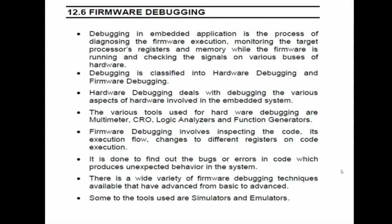How is it possible to verify that the developed product performs up to the mark? By running a program on the target board and checking the status of processor registers, internal registers of memory, and signals. If there is any error, that error can be identified, modified, or rectified to meet the expectation. This process is called debugging — it is the process of monitoring firmware execution and the target processor's register and memory while the firmware is running.